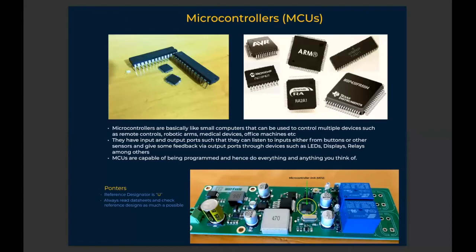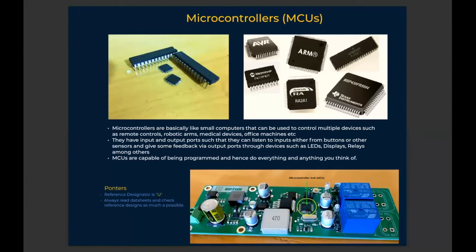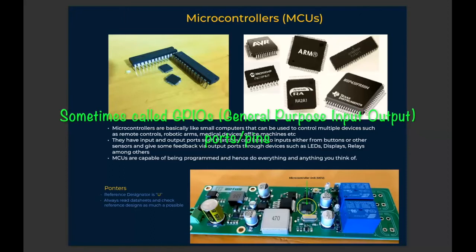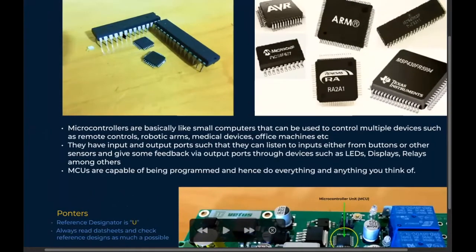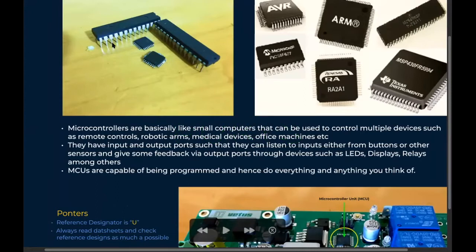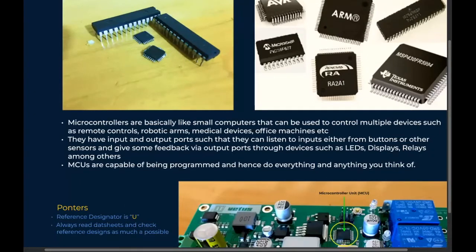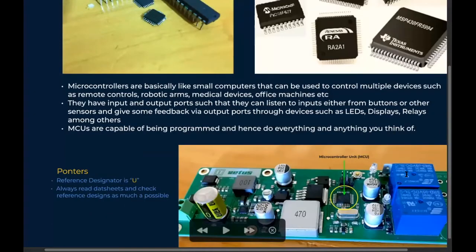MCUs have input and output ports that allow them to listen to inputs from buttons or sensors, and give feedback via output ports through devices such as LEDs, displays, or switches. When I say ports, I mean these pins you see here. These pins might drive a transistor, which in turn switches on a relay so that we can switch on a light.